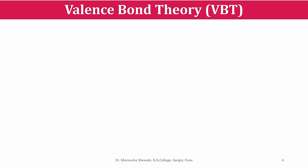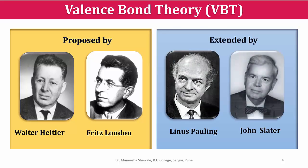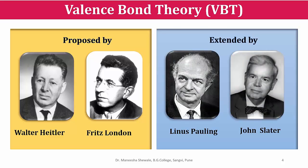First we will discuss about the valence bond theory, abbreviated as VBT. This theory was proposed by Heitler and London in 1927 and was further extended by Linus Pauling and John Slater in 1931. For his extensive research into the nature of the chemical bond, Linus Pauling received the Nobel Prize in 1954.